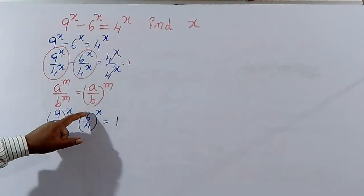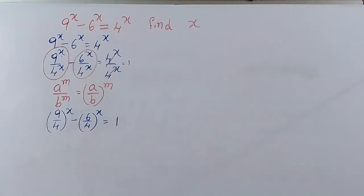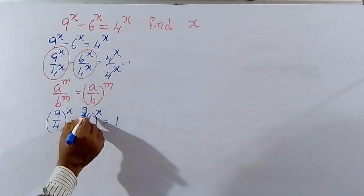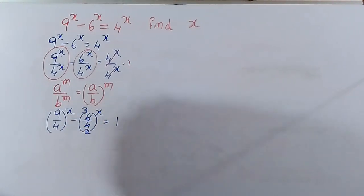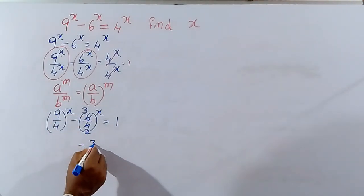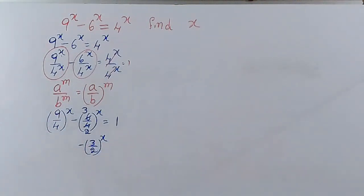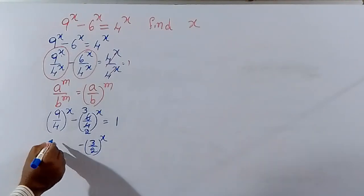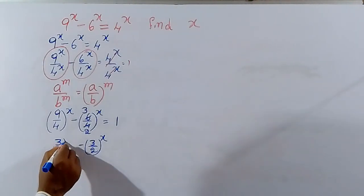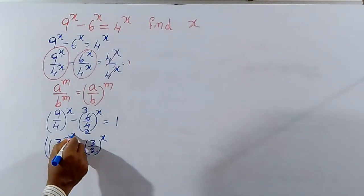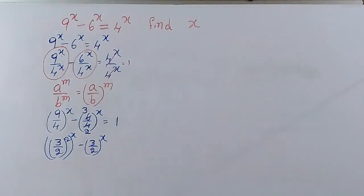Base 9 by 4, base 6 by 4. 6 by 4 simplifies: 2 table cancelled, 3 by 2. 9 by 4 can be written as 3 by 2 whole power x squared, whole power x. This is equal to 1.